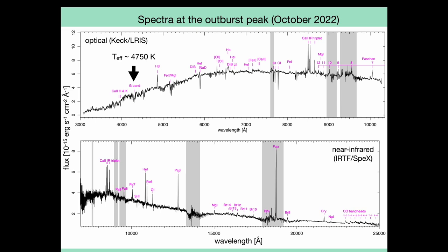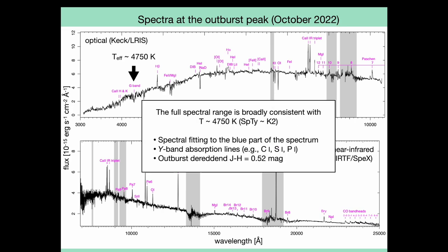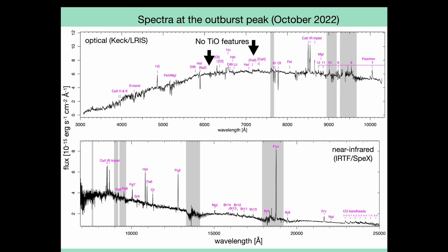Back to the spectrum. Absorption features, like the G-band, resemble a K-type spectrum. Overall, we find a consistent spectroscopic temperature of about 4750 Kelvin across the whole spectrum. This comes from spectral fitting to the blue part of the spectrum and Y-band absorption lines. Even the source's de-reddened J-H color is consistent with this temperature. Finally, I want to point out that there is no titanium oxide absorption at this stage of the outburst — this will be important later.